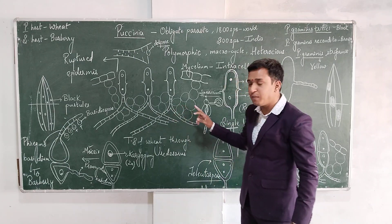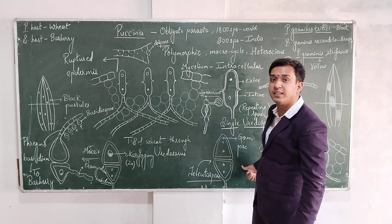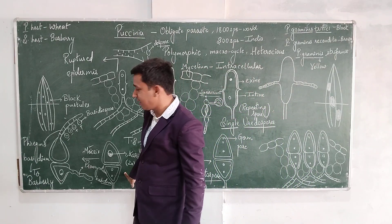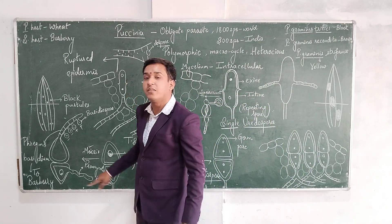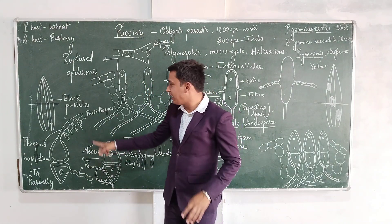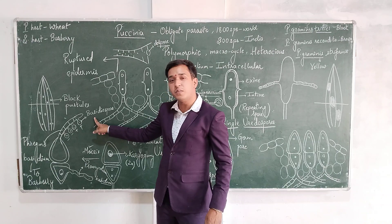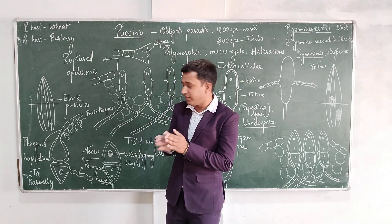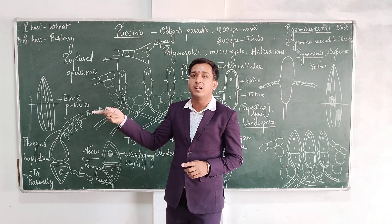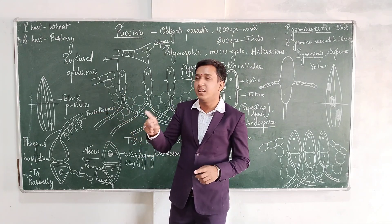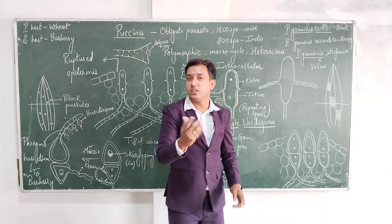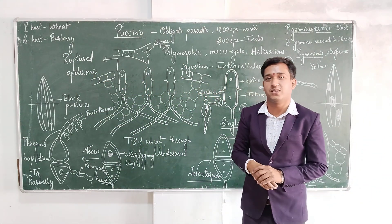So Puccinia graminis tritici mycelia are intracellular, mycrostatic, polymorphic, and heteroecious fungi; three types of spores are found in the wheat plant — uredospores, teliospores, and basidiospores. The basidiospores cause infection in the barberry plant. When basidiospores are formed, through an explosive mechanism they reach the barberry plant, and the life cycle on the secondary host continues — which we will reveal in the next video. Thank you.